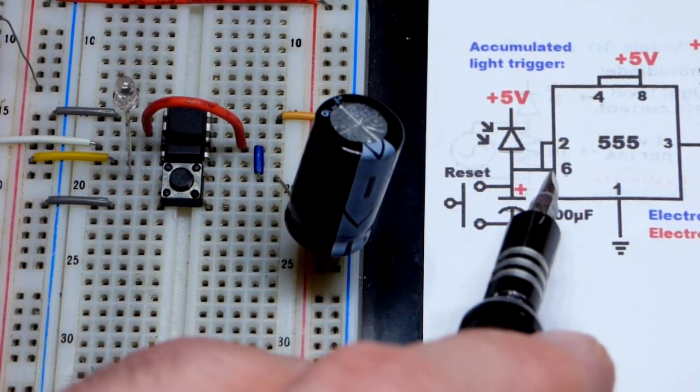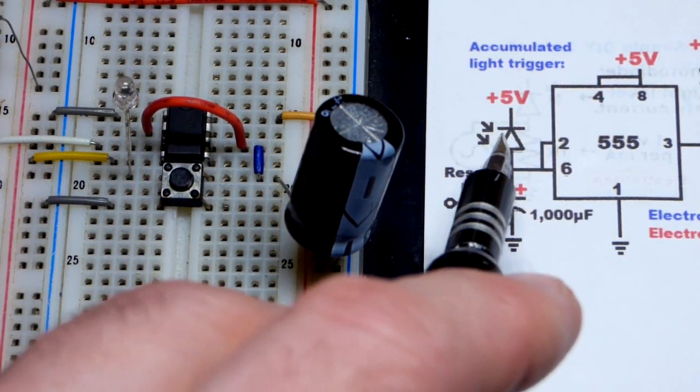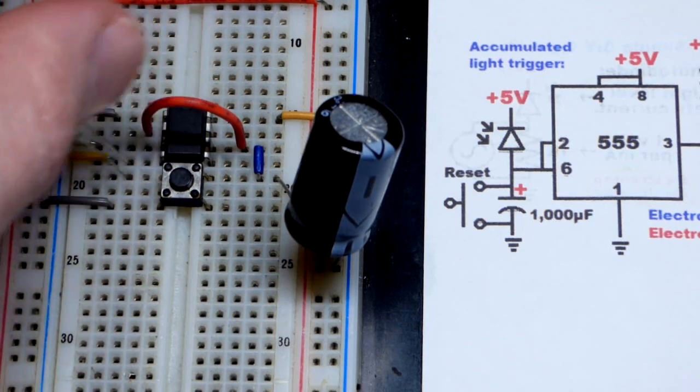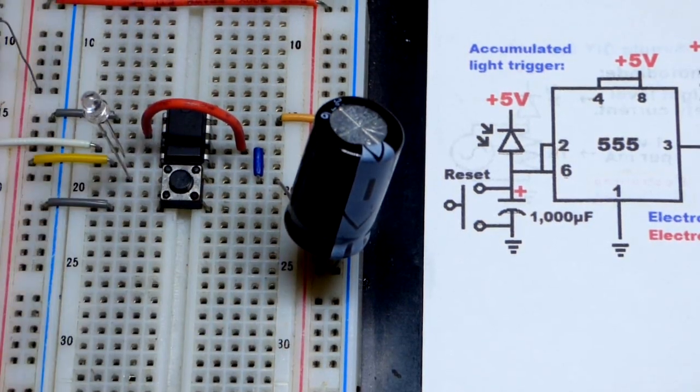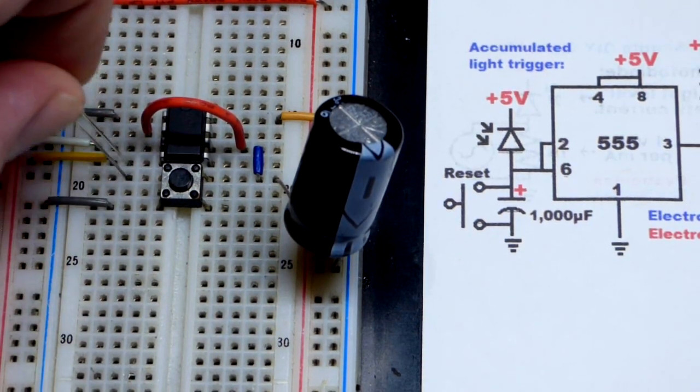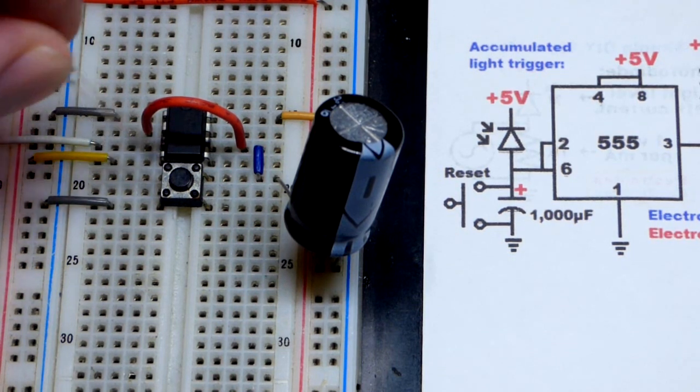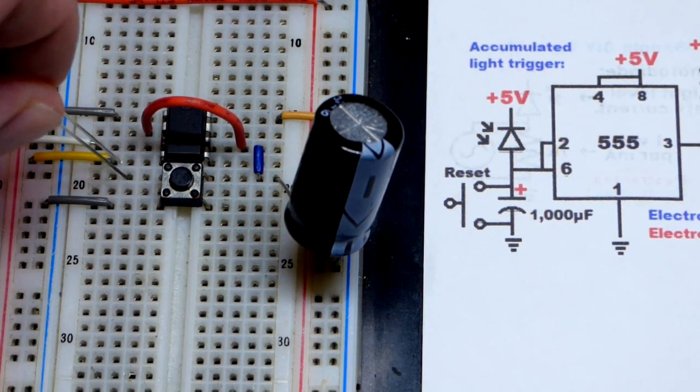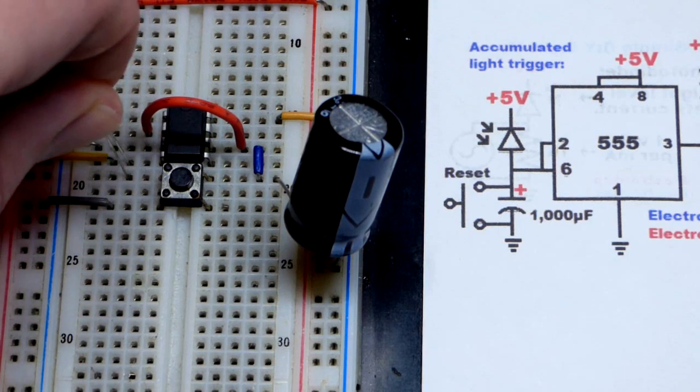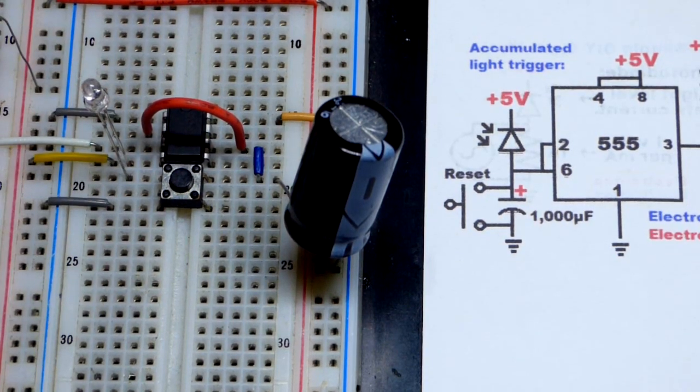Then we got the photodiode. So I got that right here. Short lead, the cathode, is to the positive side of the power supply. Long lead, the anode, to the top of the switch. So the top of the switch is always connected to the - the two top ones I should say - so that's always connected.